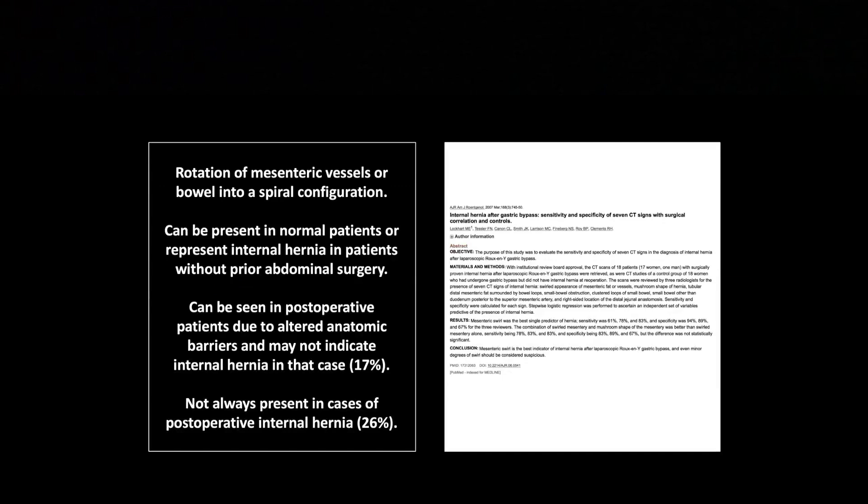The mesenteric swirl is worth mentioning. The definition of 270 degrees — a complete reversal of positions of the SMA — is difficult to apply objectively. It really didn't help much in practice. The bottom line is the swirl can take two forms: you can see the mesenteric vessels twisting on one another, and you can also get a circular swirl appearance of bowel loops involved in an internal hernia. Look for both because it can be helpful.